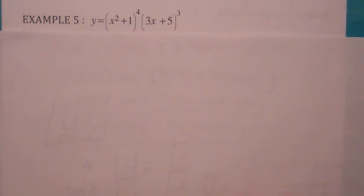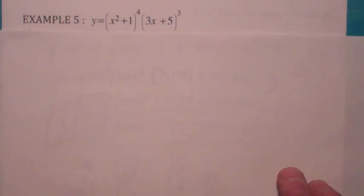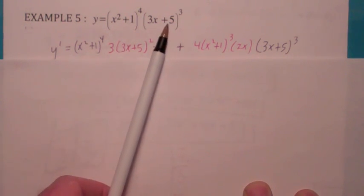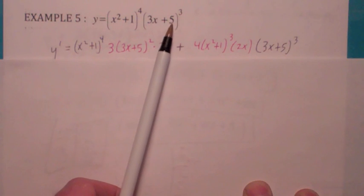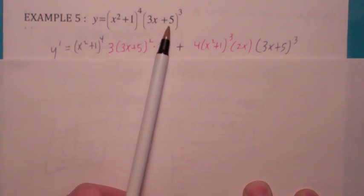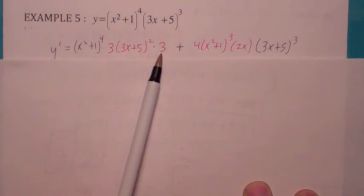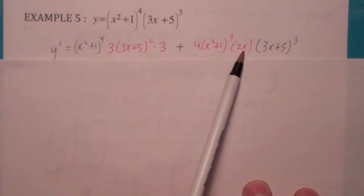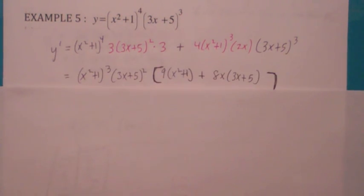This one looks like a product rule. It turns out in a lot of situations you'll be using the chain rule as a consequence — within other rules, you'll use the chain rule. Product rule says you leave the first one the same and multiply by the derivative of the second. The second happens to be a composition, so the derivative becomes: bring the three down, times this expression to the second, then take the derivative of what's inside — that's where I used the chain rule when I multiplied by three. That's half of the product rule. Plus, you take the derivative of the first, which is going to be four times x squared plus one to the third, and then multiply by the derivative of what's inside using the chain rule again, keeping the second one fixed.